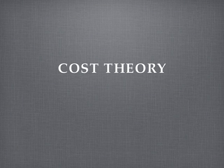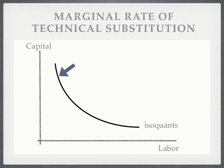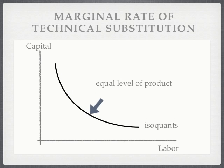What I'm going to talk about this morning is cost theory. What you see here is an isoquant. An isoquant means an equal level of products, so anywhere along this line the firm produces the same amount. All they can switch is the amount of capital and the amount of labor.